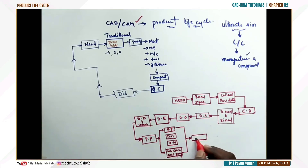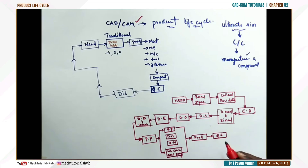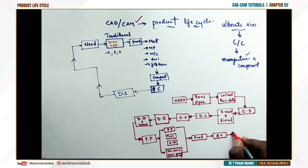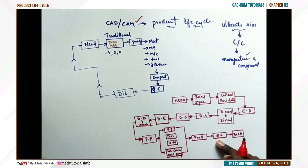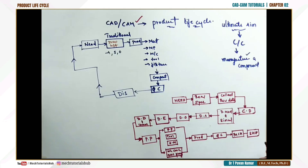Once everything is in place, production starts. After production, quality checking is performed. If everything passes quality control, packing of the component or assembly is done — also with the help of robotic systems. Quality checking is done with the help of software; this is called Computer Aided Quality Control. After packing, the component is sent for shipping to reach the customer.